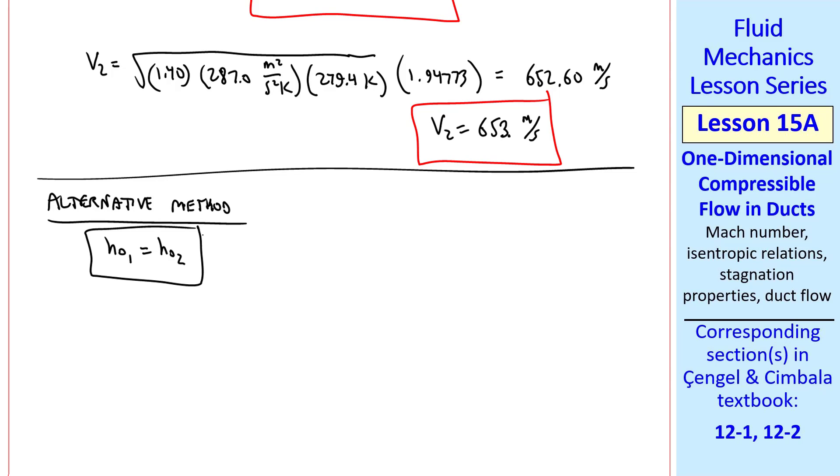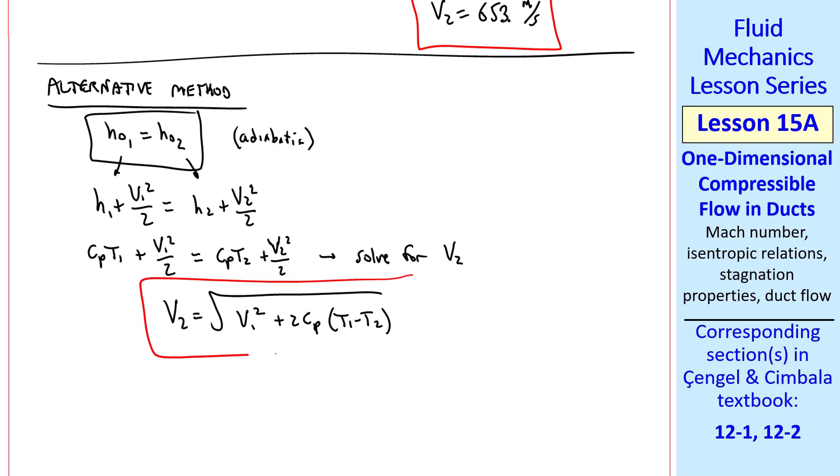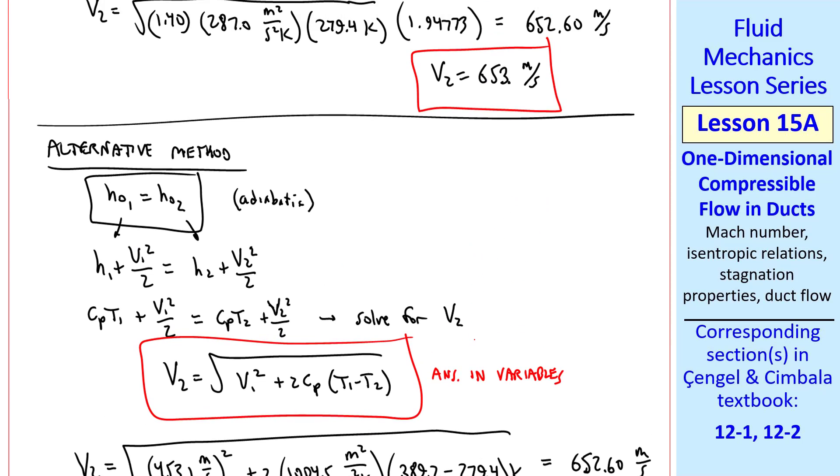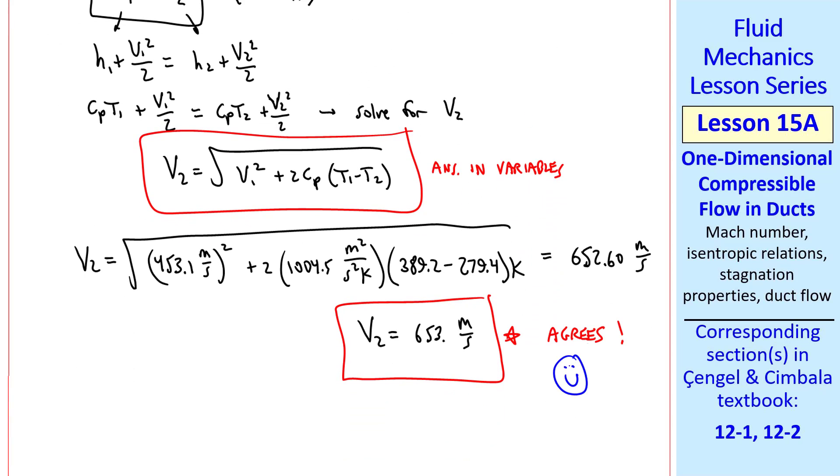I want to show an alternative method using our stagnation specific enthalpy equation. Since this flow is adiabatic, we break these stagnation specific enthalpies into two parts and apply our ideal gas equation for H on both sides, and solve this for V2. So here's our answer for V2 in variables. Plugging in the numbers, we get 652.60, or V2 is 653 meters per second to three digits. Scrolling up, we see that this agrees with our previous calculation. I'm always happy when that happens.